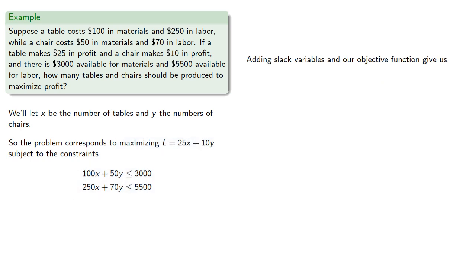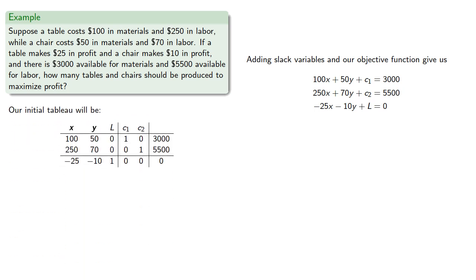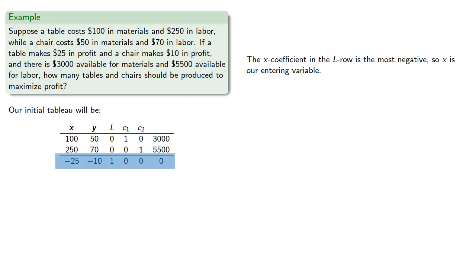Adding slack variables and our objective function gives us. We're trying to maximize the difference, and x and y are the free variables. The x-coefficient in the L row is the most negative, so x is our entering variable.